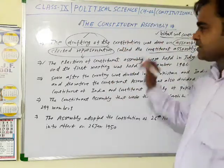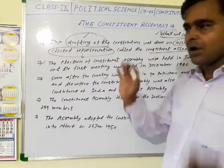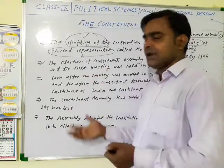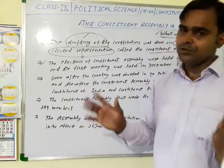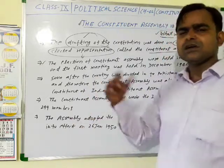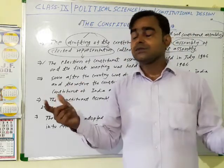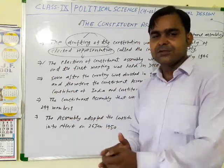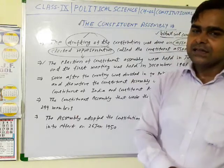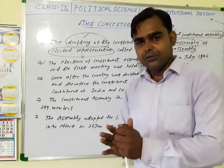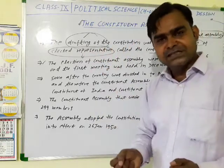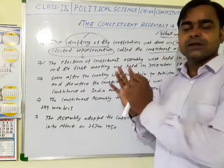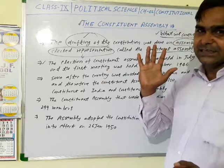Who were they? They were elected representatives. You might think — at that time, before 1947, was there universal adult franchise? No. At that time, the British government gave us limited voting rights for the provincial councils, similar to our state governments today. The members of the provincial governments elected the Constituent Assembly members.